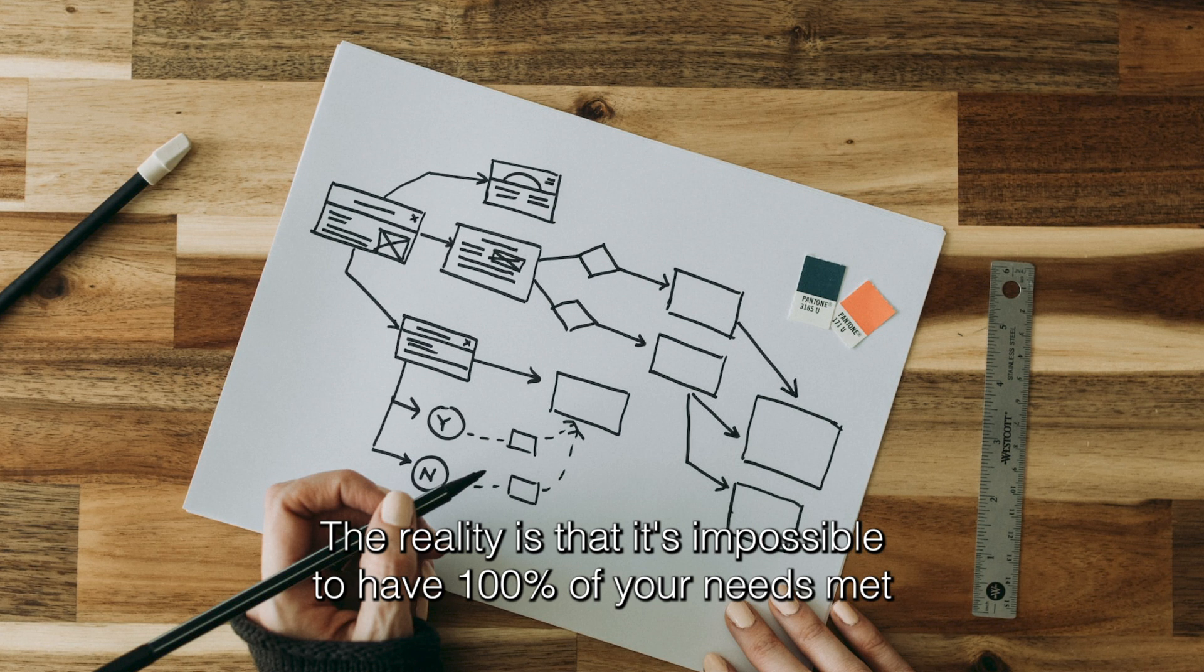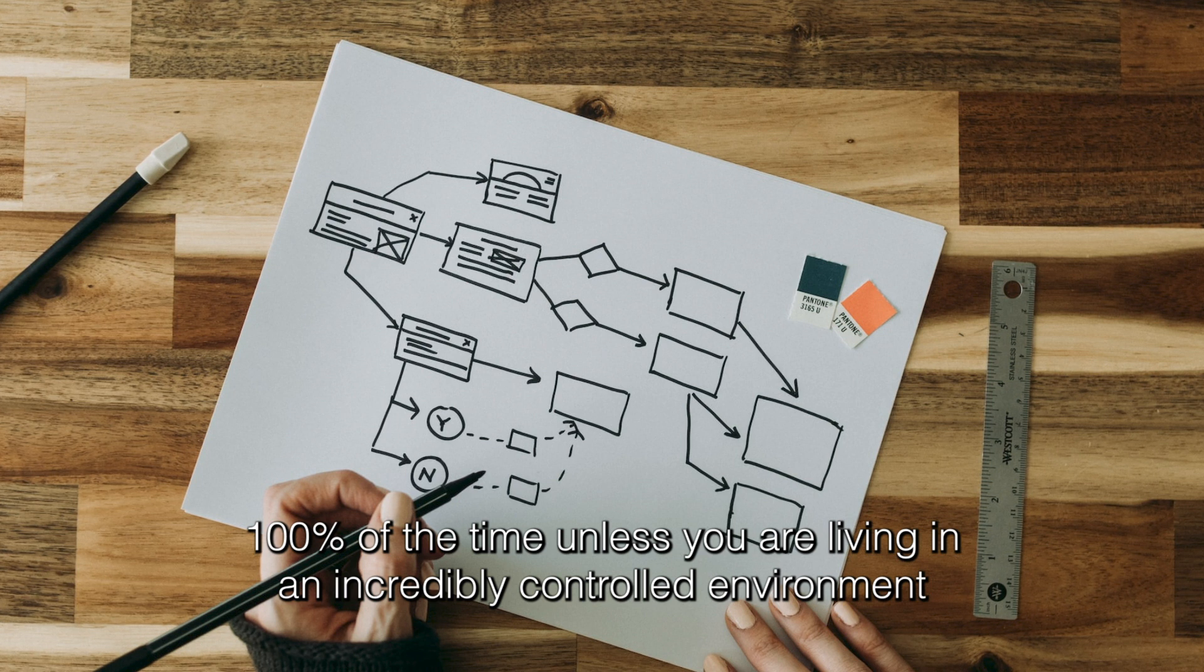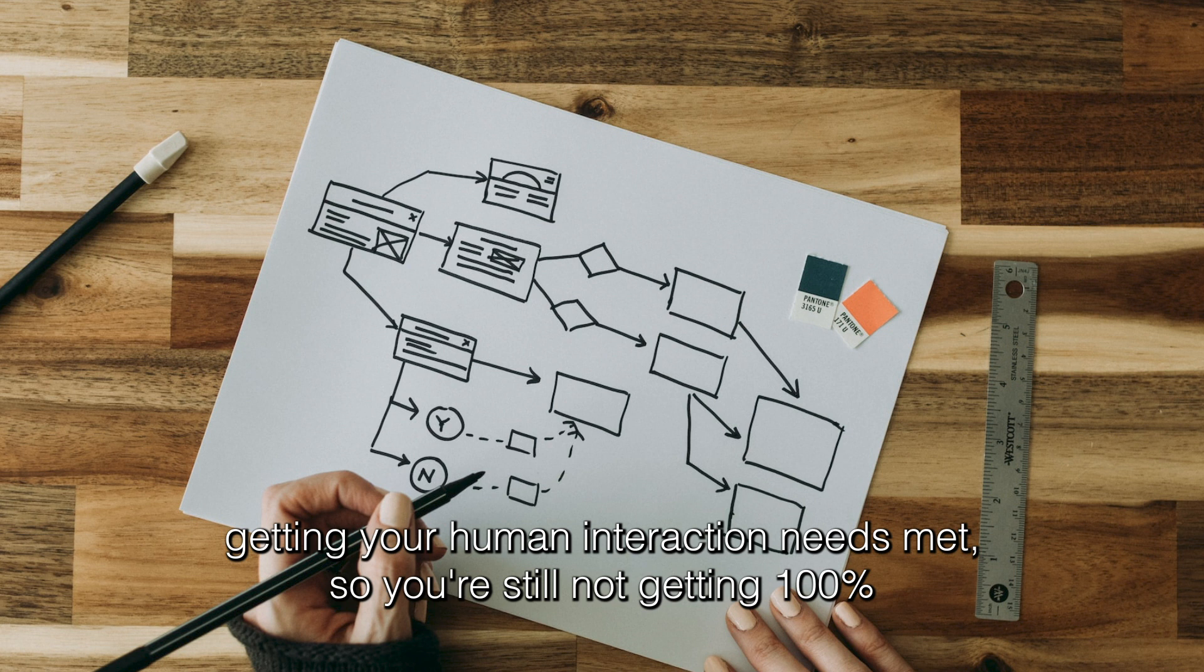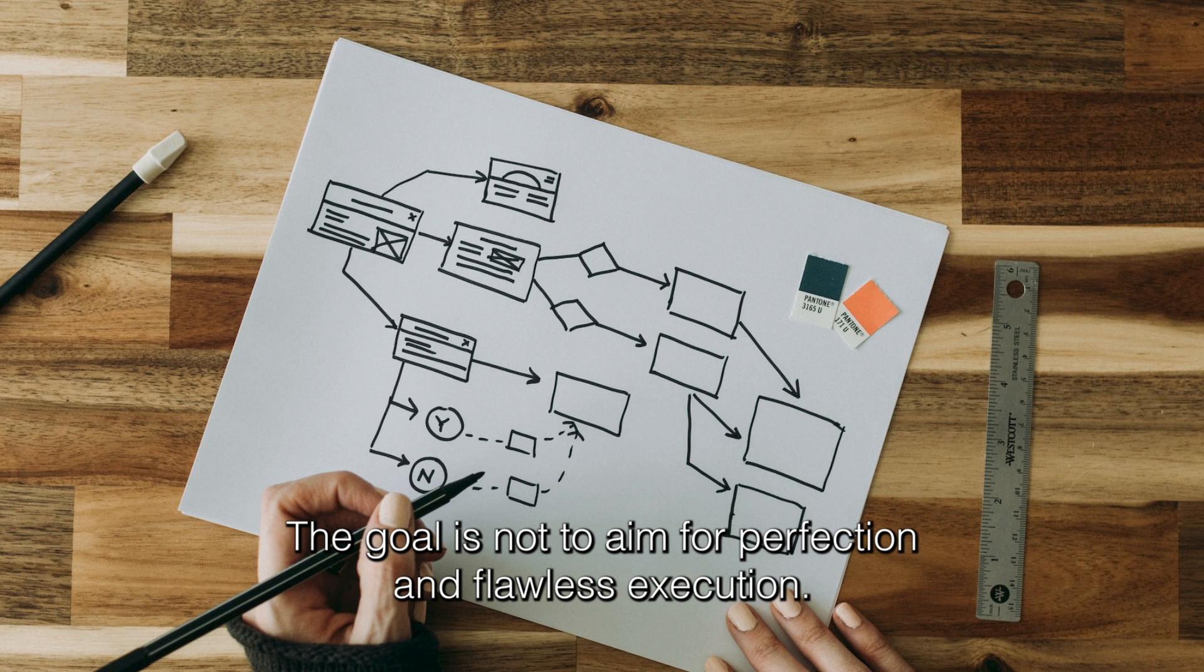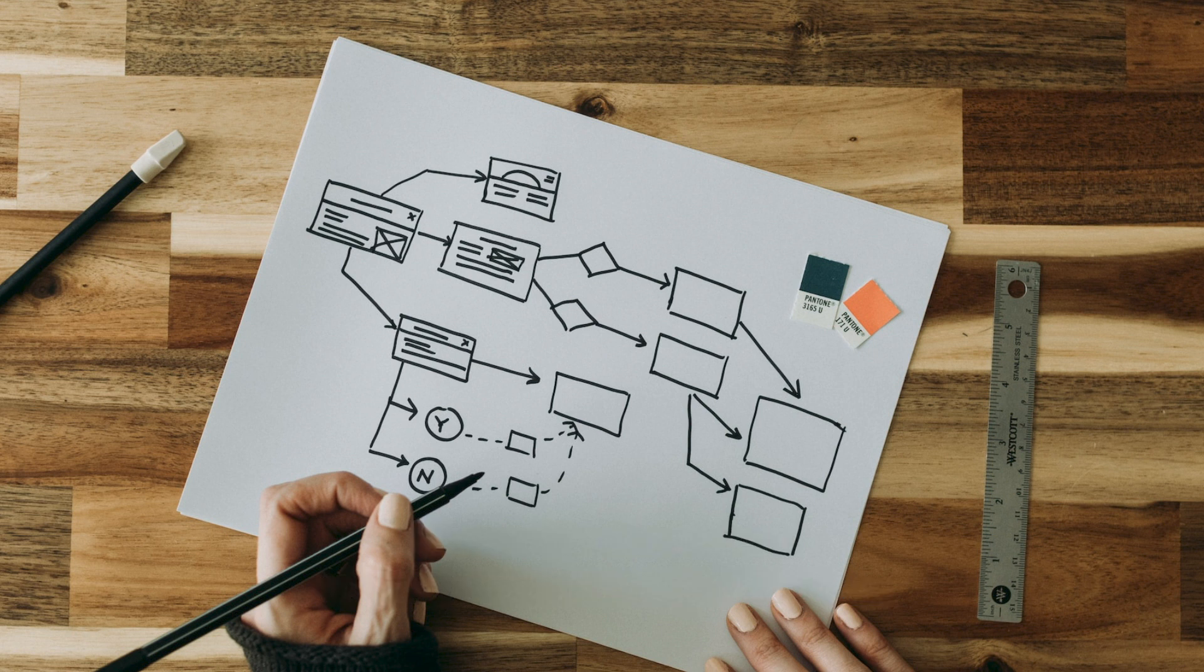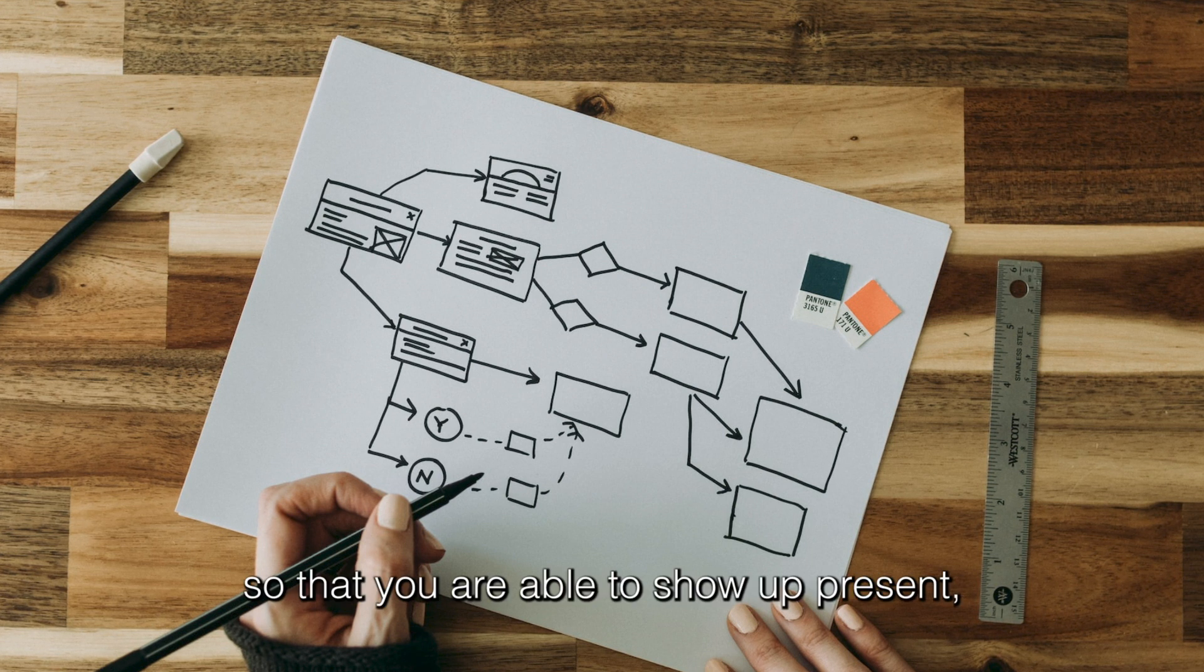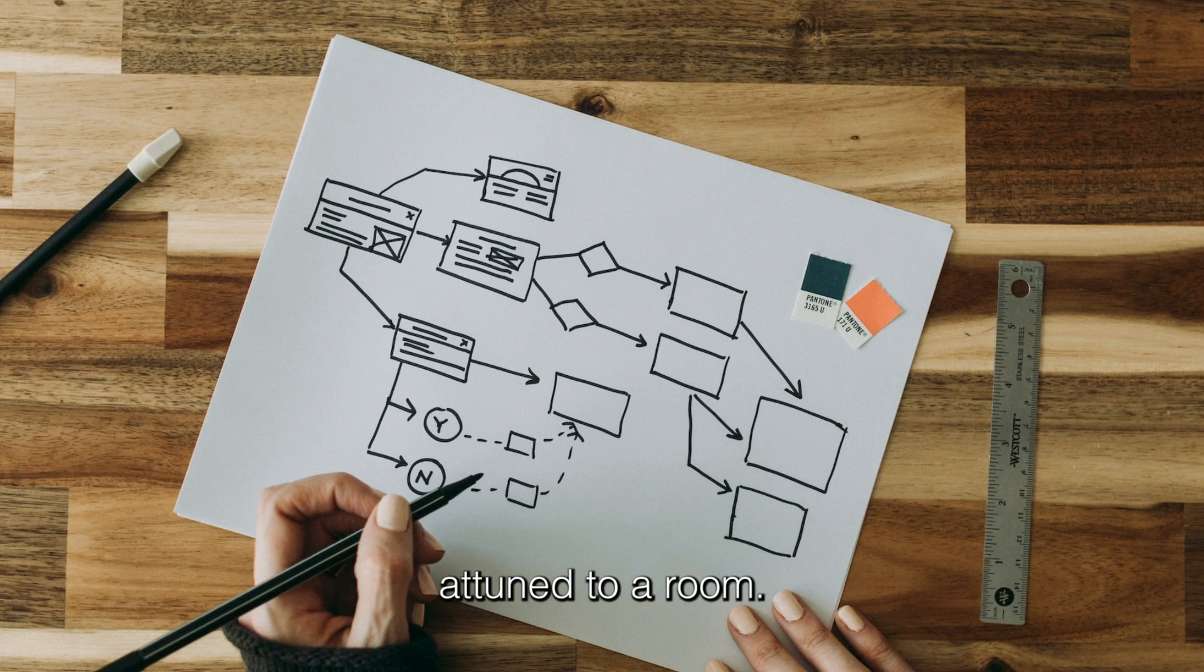The reality is it's impossible to have a hundred percent of your needs met a hundred percent of the time unless you are living in an incredibly controlled environment and probably manipulating other people, or you're alone in which case you're probably not getting your human interaction needs met. So you're still not getting 100% of your needs met. The goal is not to aim for perfection and flawless execution, it's really to be aware so that you're making conscious evaluative decisions about where you're going to put your time and your energy so that you are able to show up present, compassionate, humble, and attuned to a room.